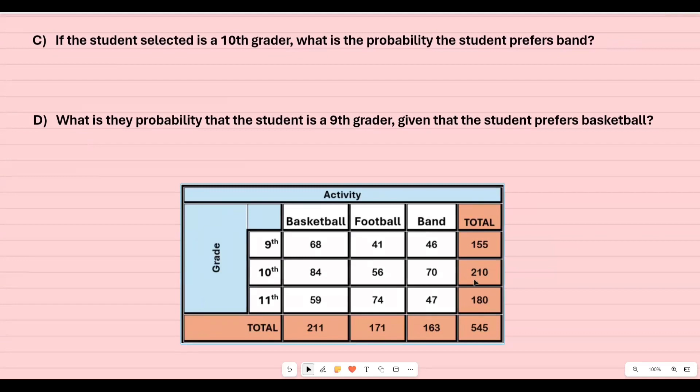Out of 210 tenth graders how many of those students prefer band? So now I'm going to go to where band and tenth graders meet and that's right here. So 70 out of 210 will be the way that I actually set up my probability.